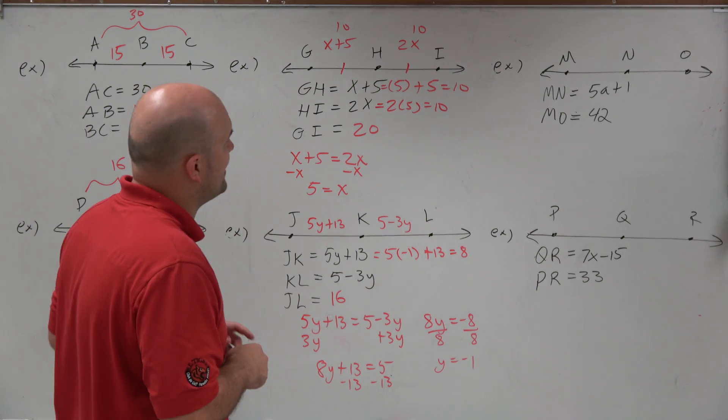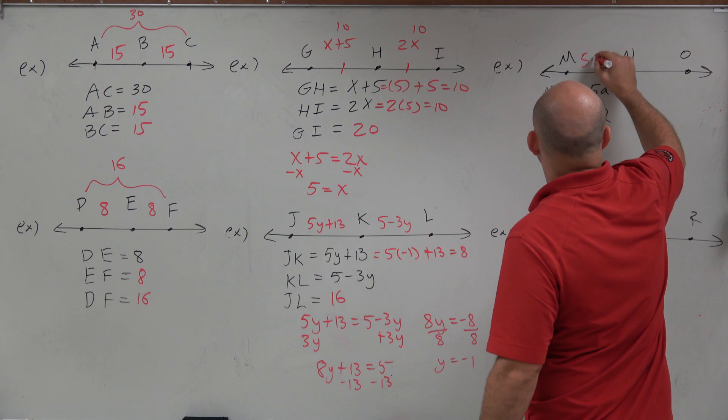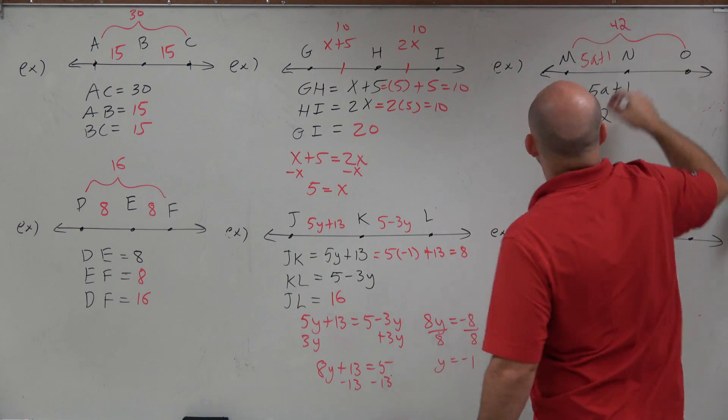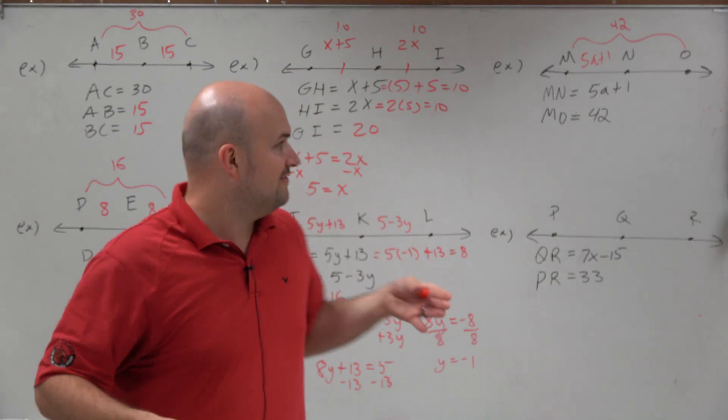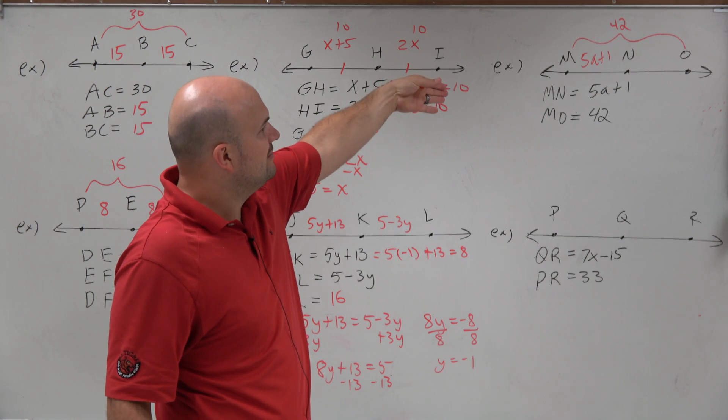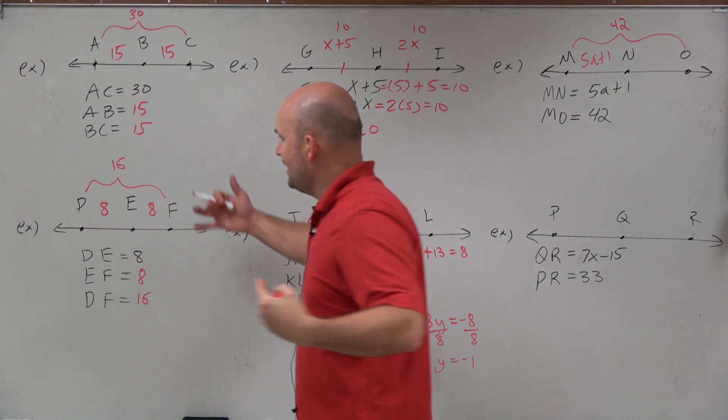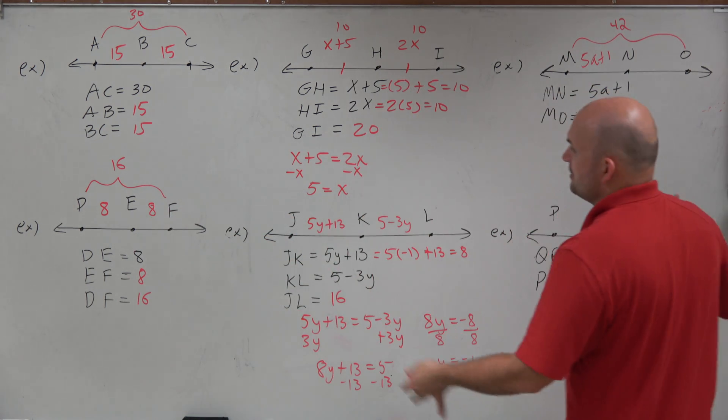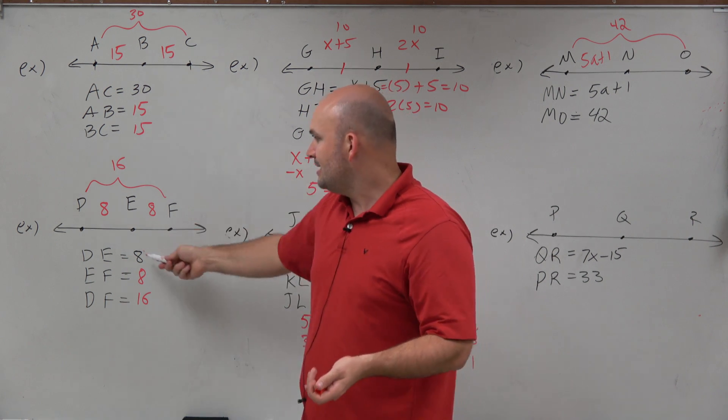All right, so in our next example, we have 5a plus 1. And MN is 5a plus 1. But then M to O is 42. So now, we don't have two sides to set equal to each other. But now we have one expression, and then we have the whole length. Now again, we've got to go back to what we understood as far as when we had a problem similar like that with numbers. And I think a lot of times when you're doing problems like this, if you get stuck, go back to the problems that were very simple to have the numbers and relate to them.